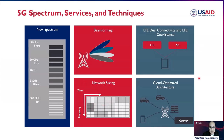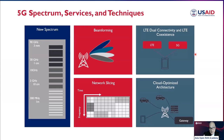5G also introduces network slicing. Unlike LTE where the network is used as one, in 5G we have different virtual slices — one slice for EMBB, one for MMTC, and one for URLLC. If you are downloading data, you are not mixed with URLLC or IoT users — you have a separate virtual slice of the network. This is what we call network slicing. It can be related to the APN concept — the network will know immediately if you're an EMBB, URLLC, or MMTC user.